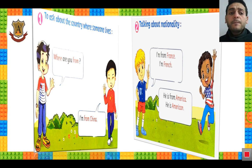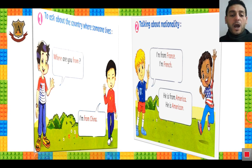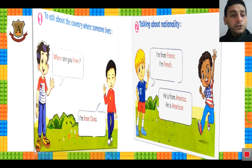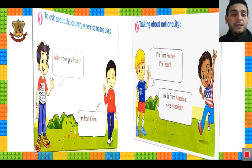How to ask someone about his country or his nationality: Where are you from? I'm from China. Where are you from? I am from China. Where is he from? He is from China. Where are they from? They are from China. Look at picture number 2: I'm from France, I'm French. He is from America, he is American.